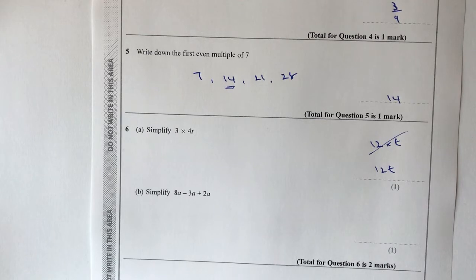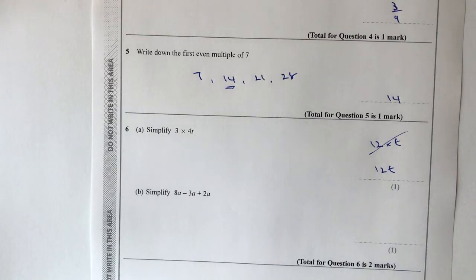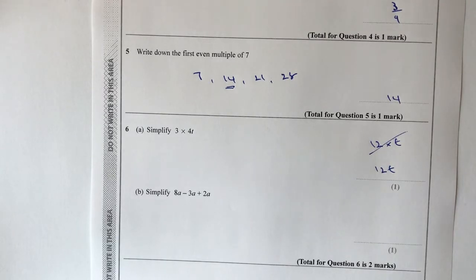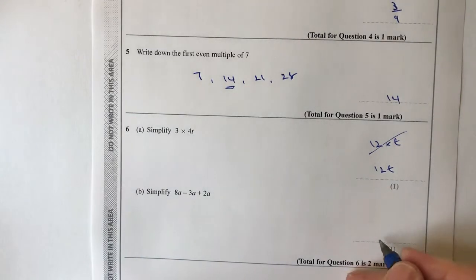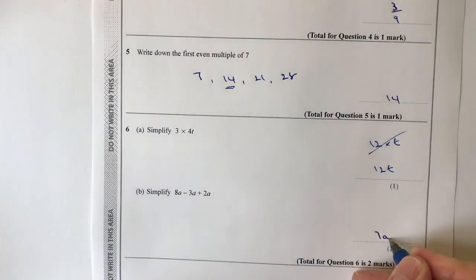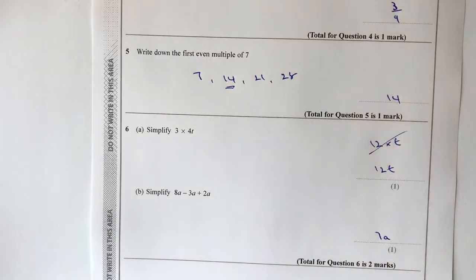Part b says simplify 8a minus 3a plus 2a. Just think of it as numbers: 8 minus 3 is 5, and 5 plus 2 is 7. So the answer is 7a.